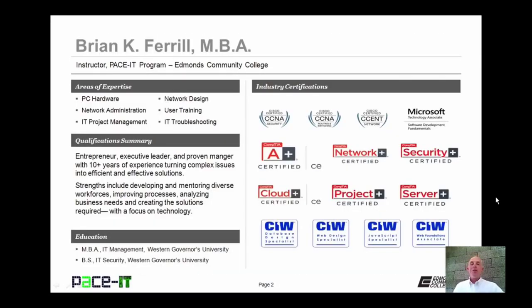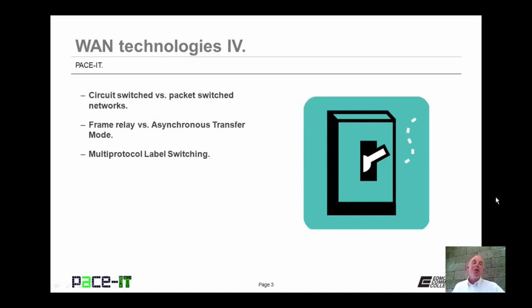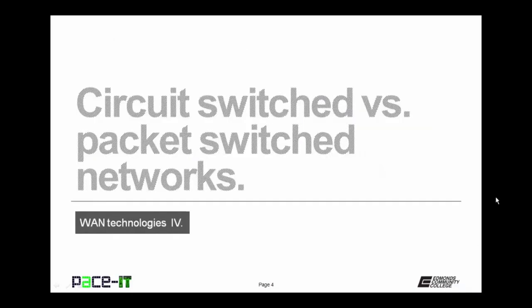Hello, I'm Brian Farrell, and welcome to Pace IT's session on WAN Technologies Part 4. Today I'm going to be discussing the difference between circuit-switched and packet-switched networks, then move on to a discussion comparing frame relay versus asynchronous transfer mode, and conclude with multi-protocol label switching. Let's go ahead and begin. Circuit-switched networks have a dedicated circuit between two endpoints used for communication. While set up, the circuit can only be used for communication between those ends.